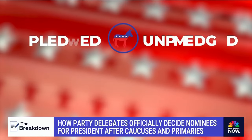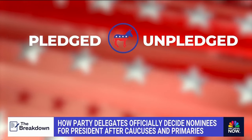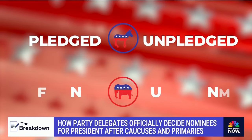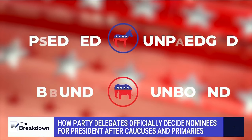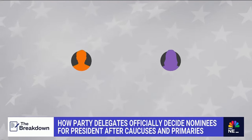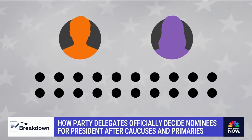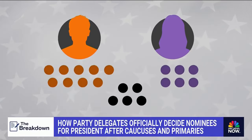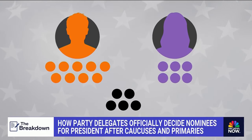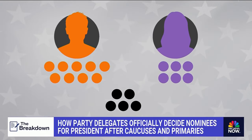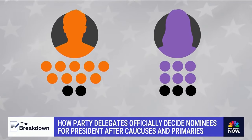There are two main types of delegates. Democrats call them pledged and unpledged; Republicans call them bound and unbound. If a delegate is pledged or bound, they have to vote for a certain candidate at the convention based on how their state voted. But unpledged and unbound delegates can vote for any candidate.